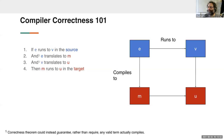Let's start with compiler correctness 101: how do you prove a compiler correct? I'm using two colors to represent the source and target language. In its simplest form, compiler correctness says: if we have some source term e that runs to a value v in the source language, then we can translate e into some target term m, and m should run to some target value u, where v and u are related across languages.